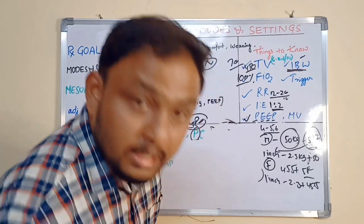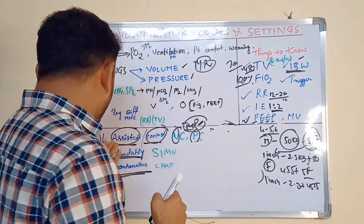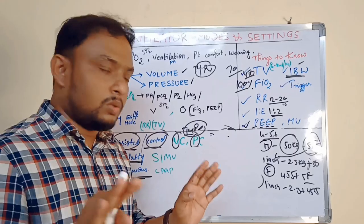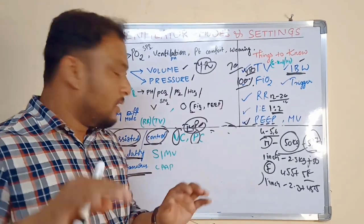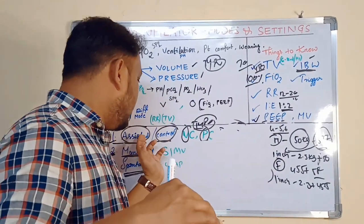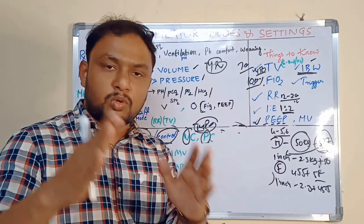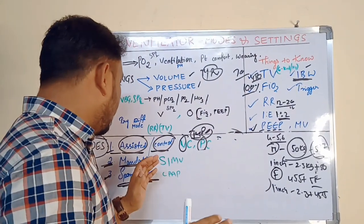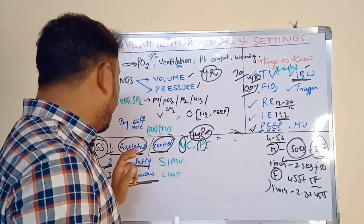This is about assist control modes. Assist control is a high, superior level of modes. When the patient's lungs are not in a position to work properly, or in the initial stage, first we will start with the assist control modes — like VAC modes, PAC modes — volume and pressure control modes.